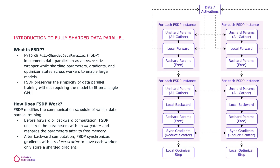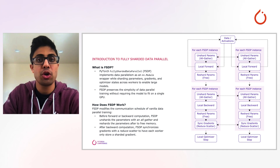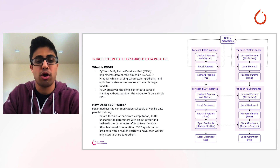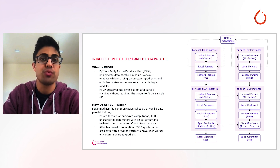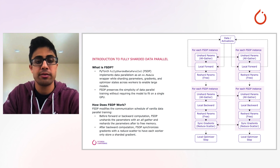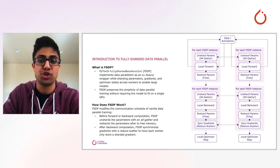FSDP works by modifying the communication schedule of vanilla data parallel training. Before forward and backward computation, FSDP unshards the parameters with an all-gather, proceeds to run computation, and then performs a reshard to free memory. Gradient synchronization occurs in the backward pass with the reduce-scatter operation to ensure each rank only stores a sharded gradient. The optimizer then acts on sharded parameters and sharded gradients.